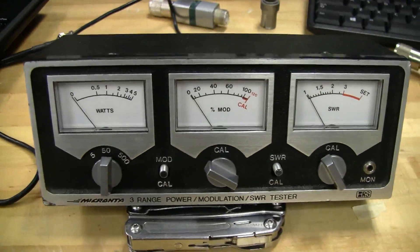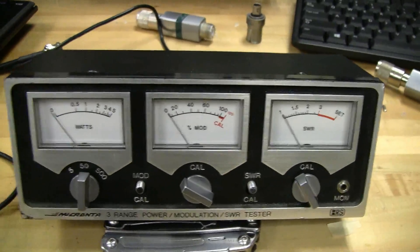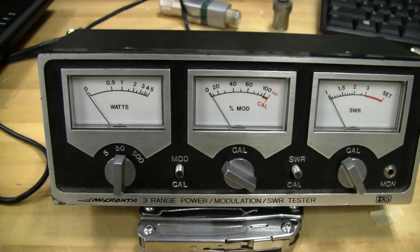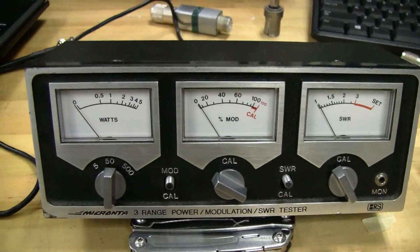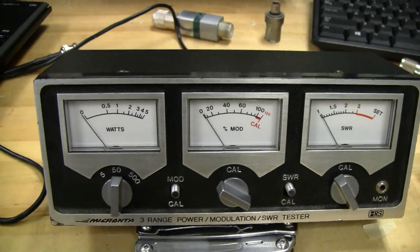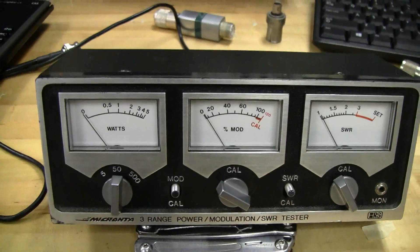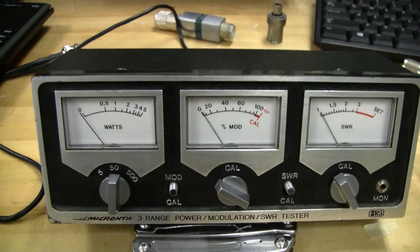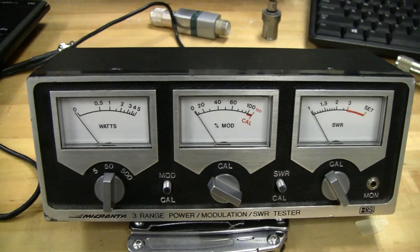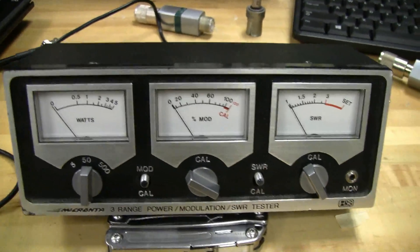Gentlemen, welcome back to the Microwave Lab. Today we're going to be talking about the SWR meter on this old classic Micronta 3-range CB meter. The purpose of this video is not necessarily just about this meter, but it's more of a test of cheap SWR meters that you can find.